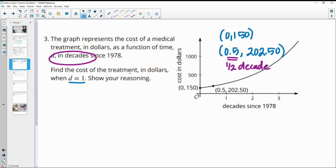So we know that exponential functions grow at the same rate over the same period of time. So if we look at this growth rate here from zero to a half decade, it should be the same as what we would get to go to one full decade. So let's do 202.5 divided by 150. And we find out that this growth factor is 1.35.